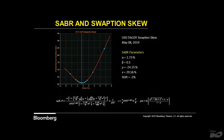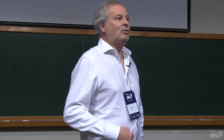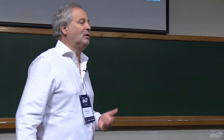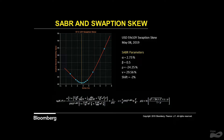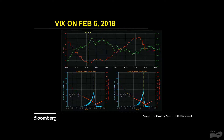In a model, you have state variables and parameters. Parameters are supposed to be fixed, guiding the dynamics of state variables. When you recalibrate, you change parameter values — they kind of become state variables themselves, which leads to problems. Here is an example of SABR parameter values. They are supposed to be fixed, but you see they are constantly re-evaluated through time, going up and down instead of remaining fixed.